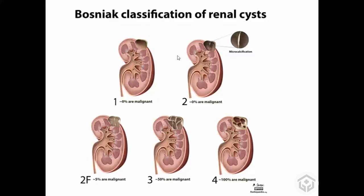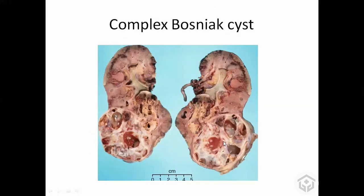As a house officer, if you see an ultrasound report, nowadays they use the Bosniak classification of renal cysts. A simple cyst is Bosniak category 1 - not malignant. Depending on the solid area and the thickness of the septae, there are Bosniak 2, 2F, 3, and 4. Category 4 is almost 100% malignant, category 3 is 50% malignant, category 2F is 5% malignant, and categories 1 and 2 are not malignant. A Bosniak 4 cyst is 100% malignant.